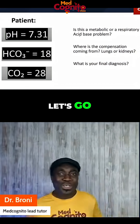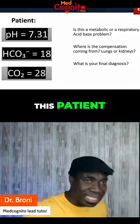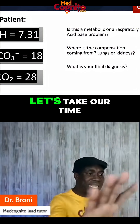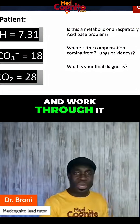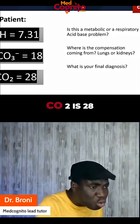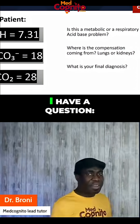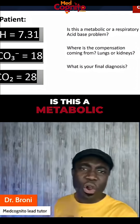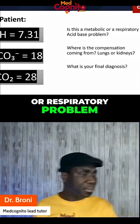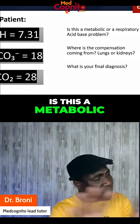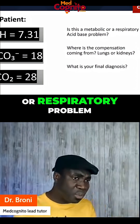Let's go. This patient: the pH is 7.31. Let's take our time and work through it. HCO3 is 18. CO2 is 28. Is this a metabolic or respiratory problem? First and foremost, is this a metabolic or respiratory problem?